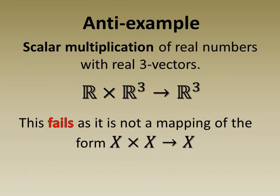In the anti-example we see that scalar multiplication of real numbers with real three vectors is not a binary operation. It fails to be so as it is not a mapping of form X cross X to X.